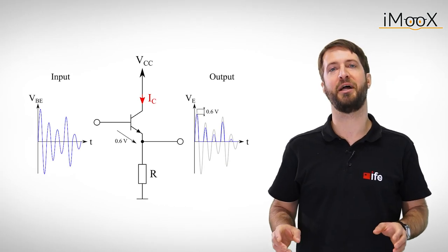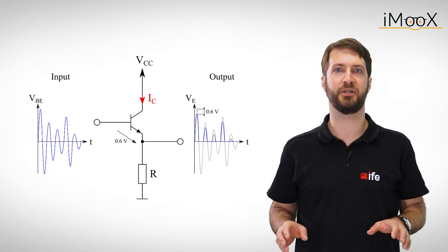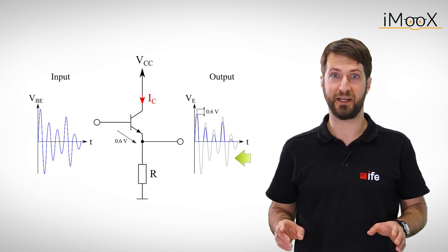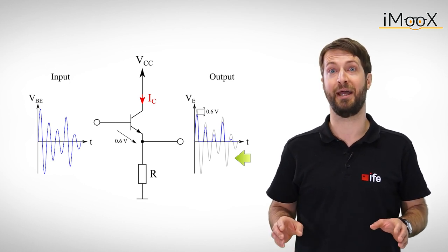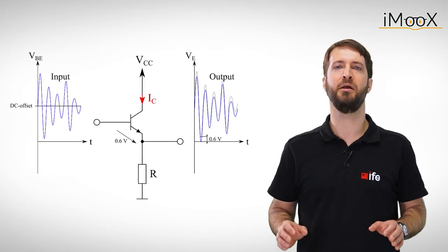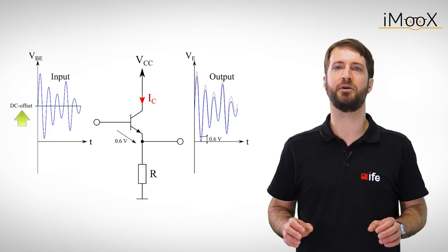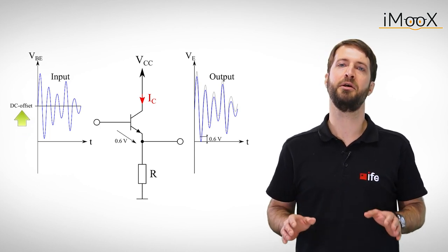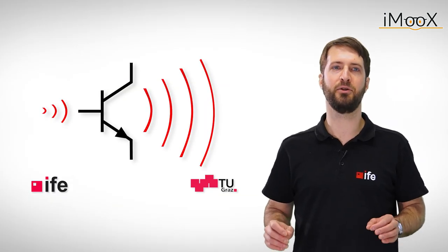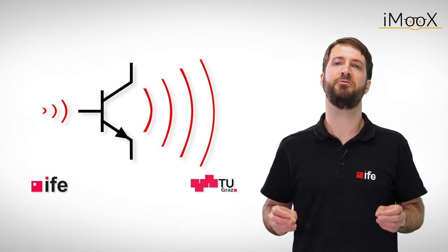But if we want to amplify an AC coupled signal, like an audio signal, we have to make sure that we don't cut off the negative swing of the output signal. You might have heard of this effect, it's called clipping, and it sounds like this. In order to avoid clipping, we simply add a DC offset to the input signal. This is called biasing and it is necessary for any transistor amplifier. Now we are going to have a closer look at an actual design example of an emitter follower for audio signals.